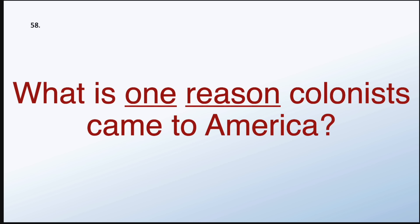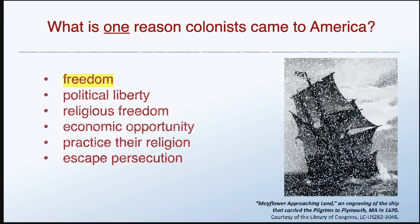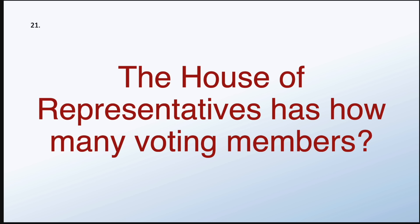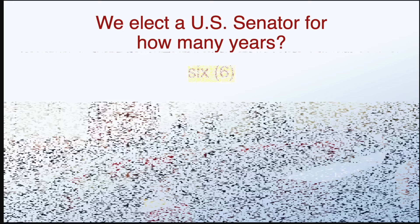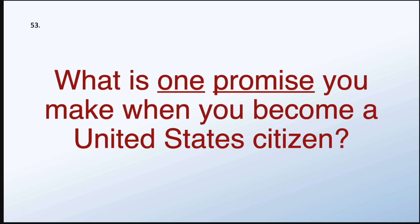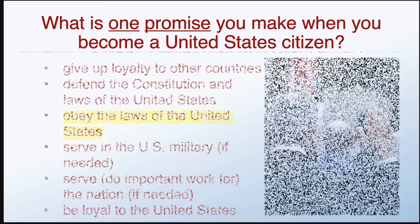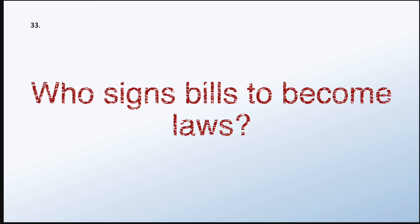What is one reason colonists came to America? For freedom. The House of Representatives has how many voting members? 435. We elect a U.S. senator for how many years? What is one promise you make when you become a United States citizen? To obey the laws of the United States.